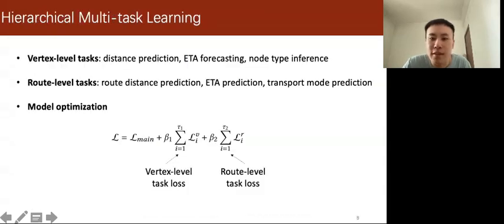In the third task, we differentiate the representations of various transport modes through multiple tasks. Besides, incorporating multiple related auxiliary tasks can also improve the recommendation performance.